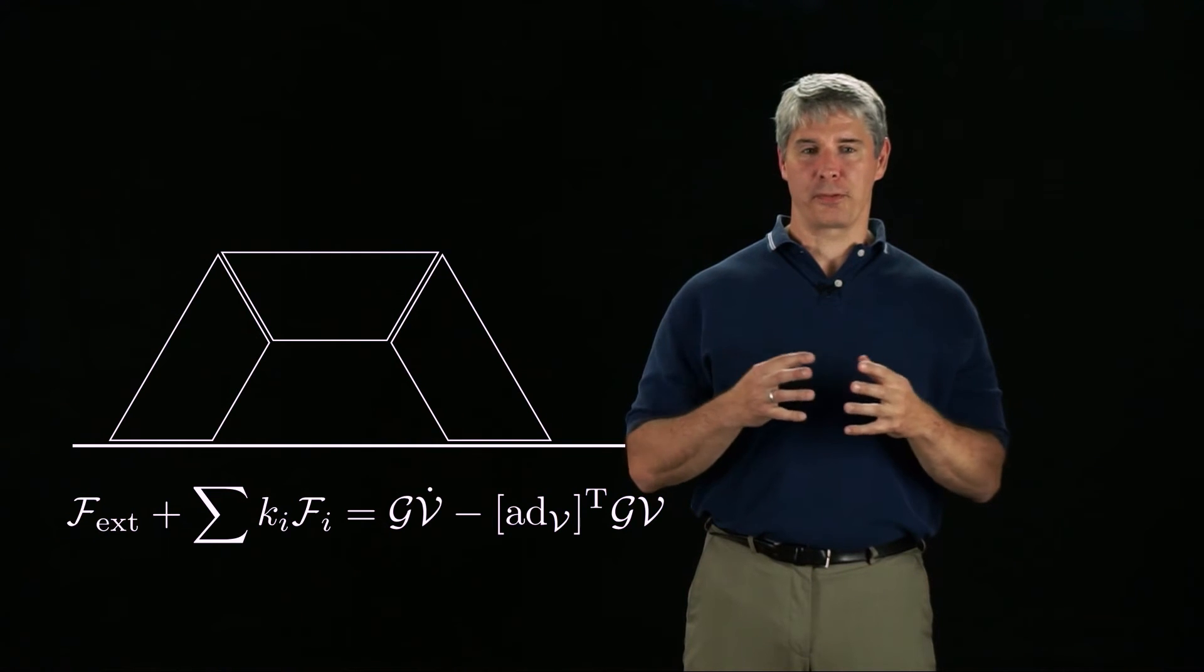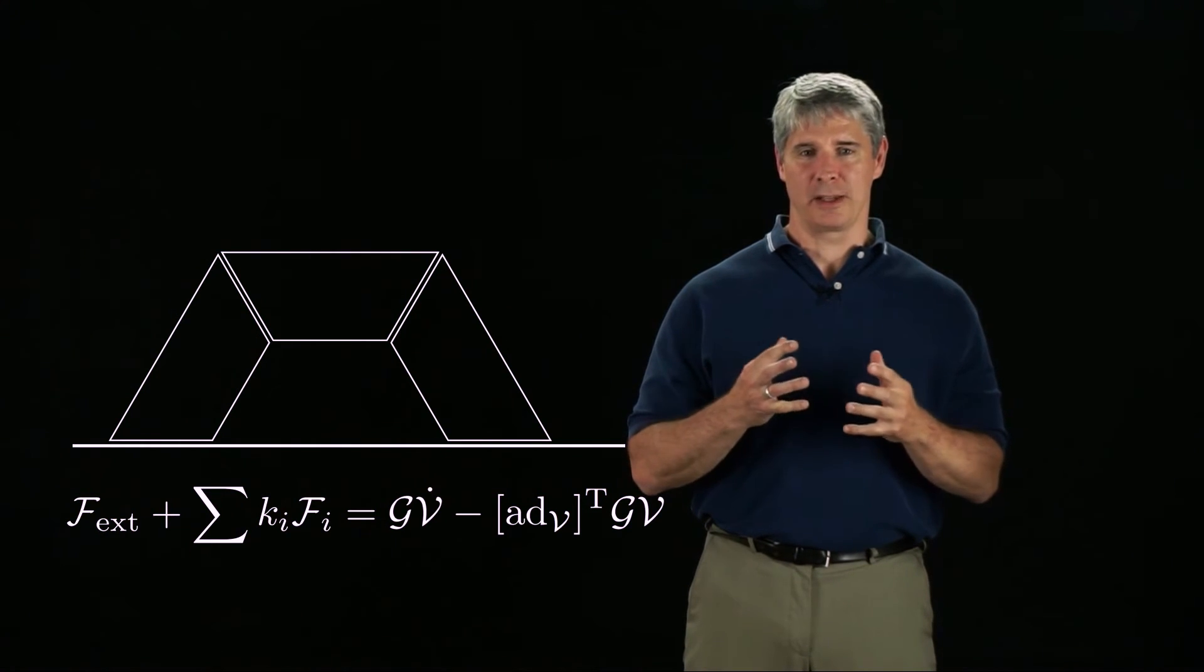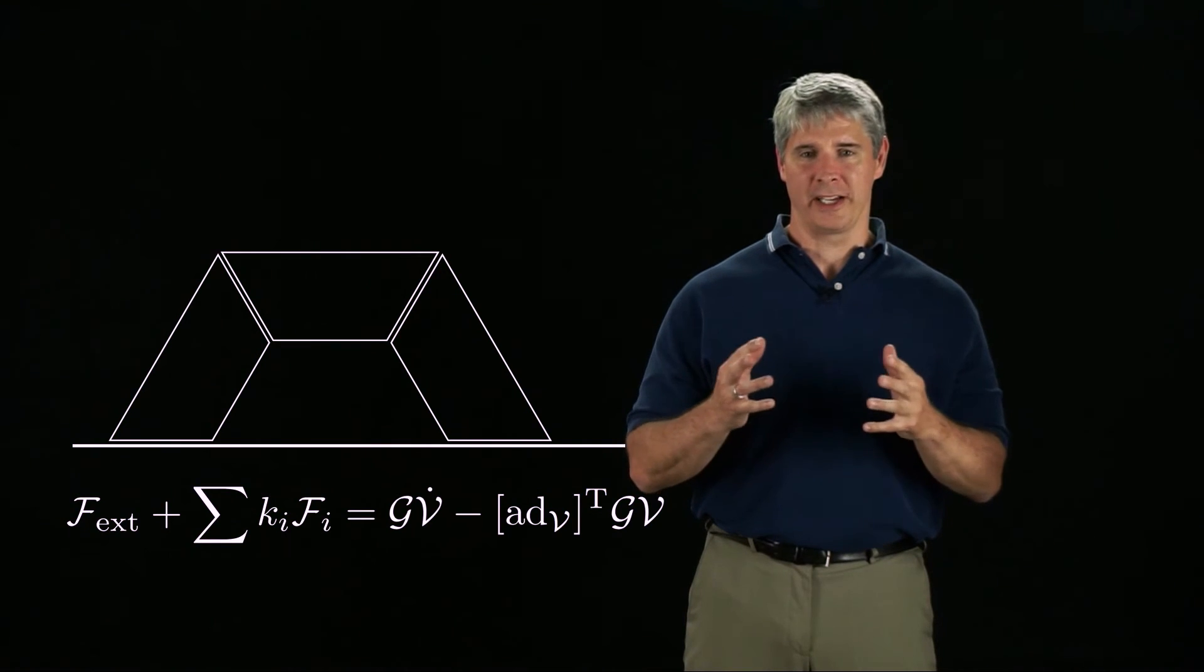If the assembly were in three dimensions, nothing changes about the analysis except that we would approximate the quadratic friction cones as polyhedral cones.